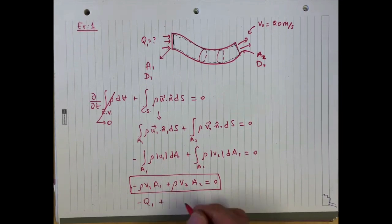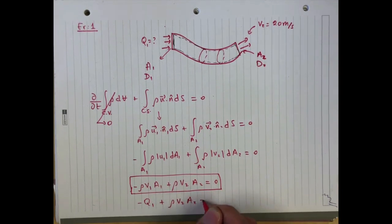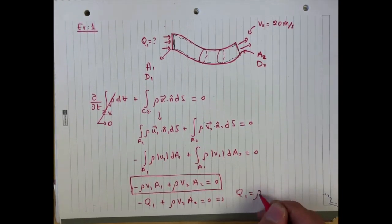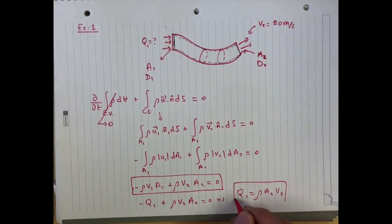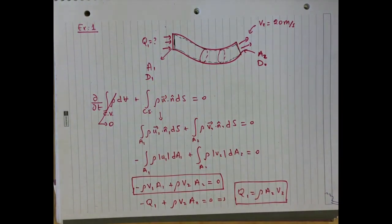Minus q1 plus rho v2 a2 is equal to zero, so that implies that q1 is simply rho a2 v2. Depending on a2 and rho, you can determine your pumping capacity at the inlet.